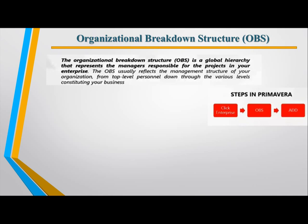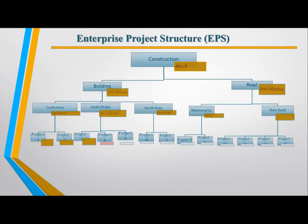The entire breakdown structure is the Enterprise Project Structure (EPS), which represents the responsible manager and the structure of the building. The next step is to run the EPS with the construction, then combine the construction and represent the development — the building is totally different from the road line.